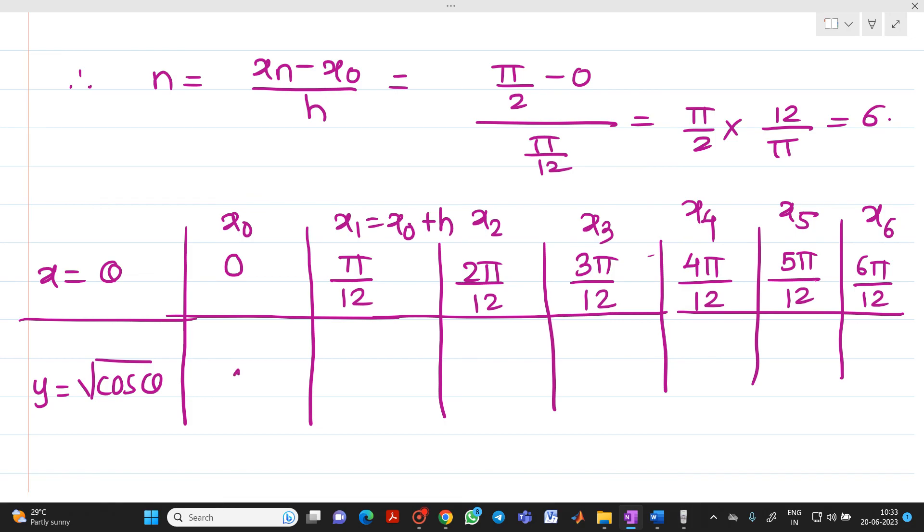Here you will get it as 1, we have seen it already. This will be 0.98282. Now when you substitute θ equal to 2π/12, you will get answer as 0.93060. When you put it as 3π/12, you will get answer as 0.84090.